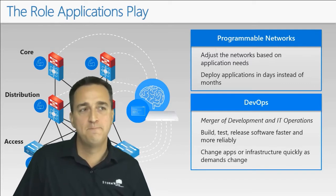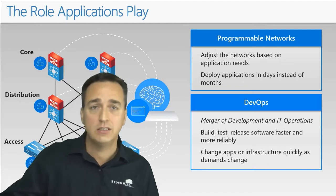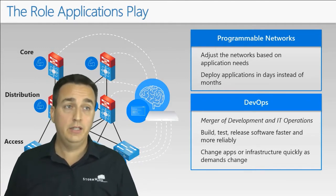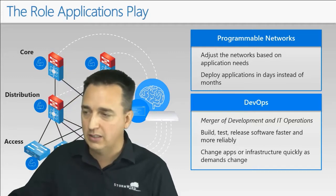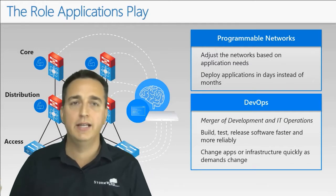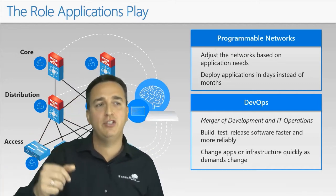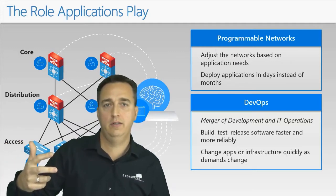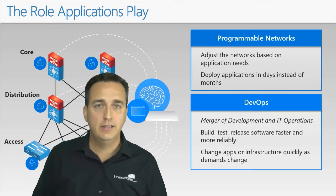Instead of having developers build applications that work on our networks — which is what we've been doing for ages — we want to allow developers to build applications that will work on our networks no matter what. We have to change our thought process and understand that applications are going to control us going forward. Networks defined by software, networks defined by applications. Programmable networks that adjust based on application needs let us deploy applications in days instead of months.